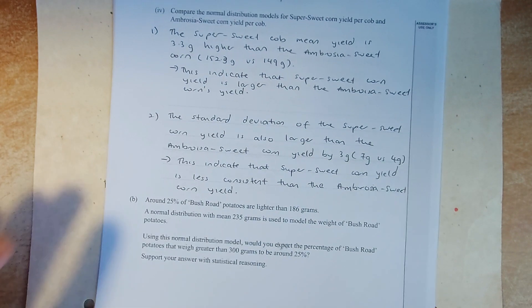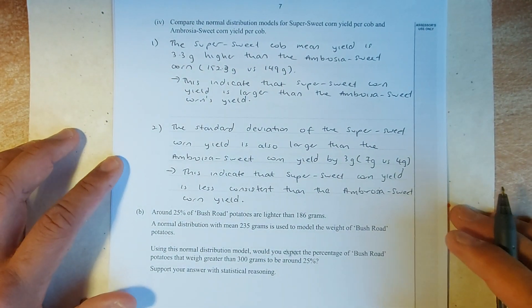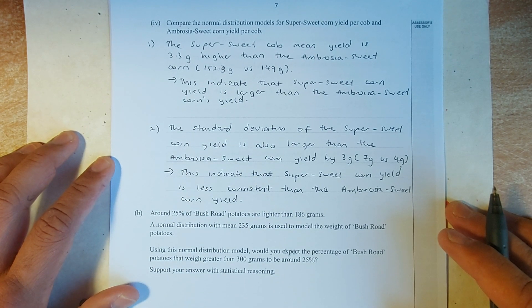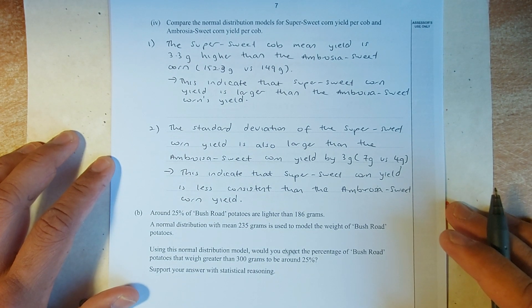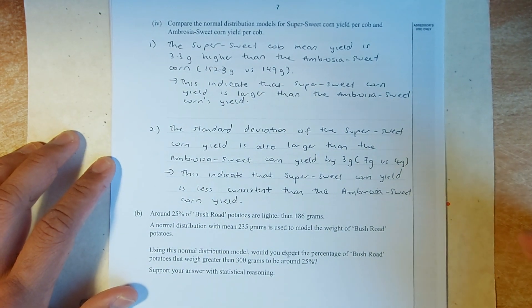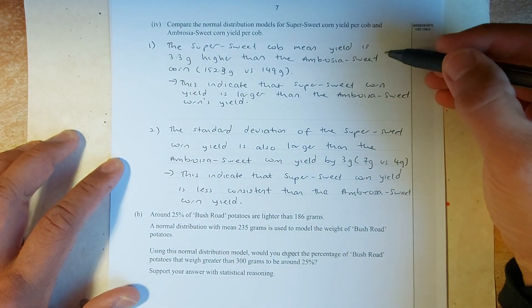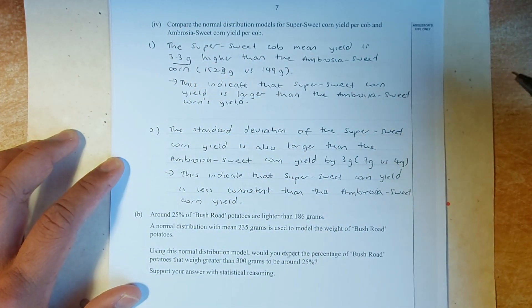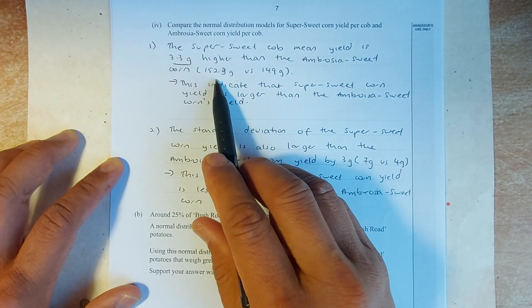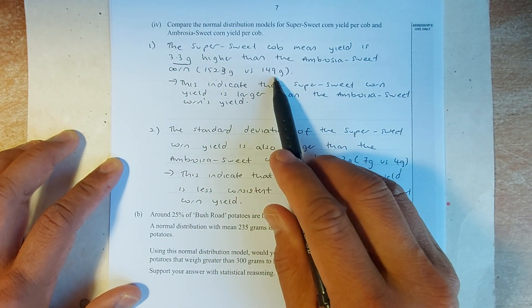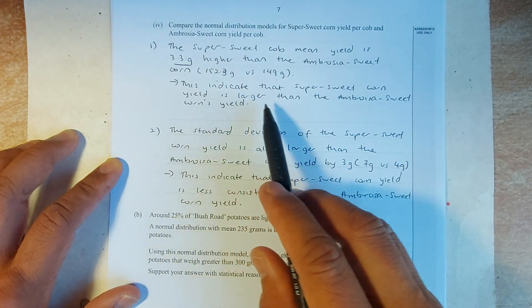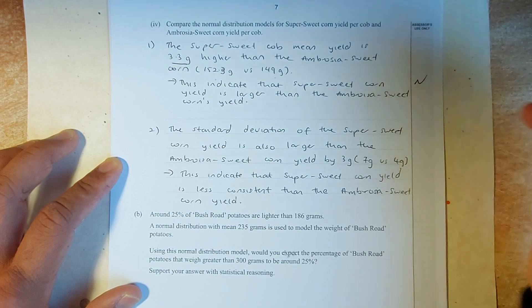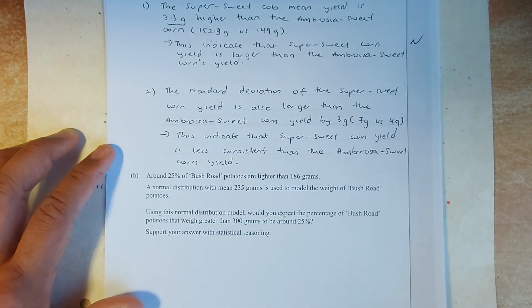Okay, so now the next question asks you, compare the normal distribution of super sweet and the embryosal corn yield per cob. Okay, so we can see from the graph and as well as the distribution, they said the super sweet yield is 3.3 grams higher than the embryosal. The super sweet was 152.3 while the embryosal 149. So, what does this show? This show that super sweet corn has a larger yield than the embryosal yield. That will give you achieve.